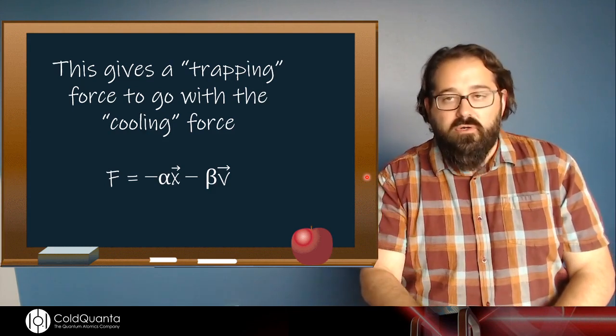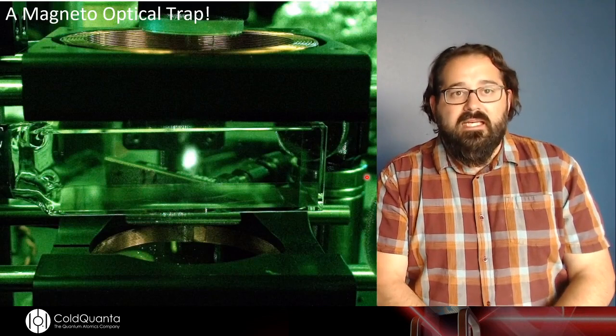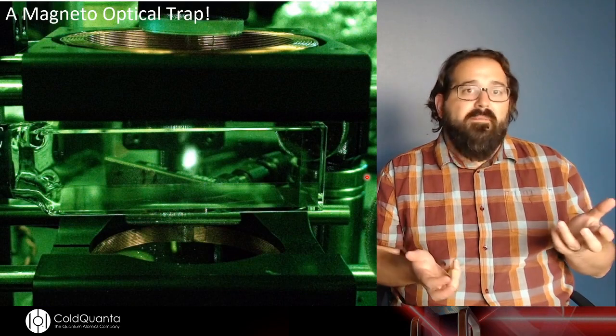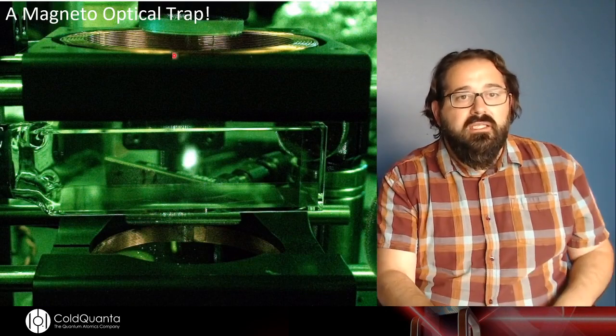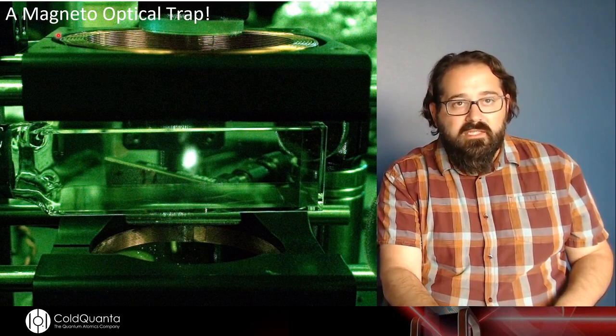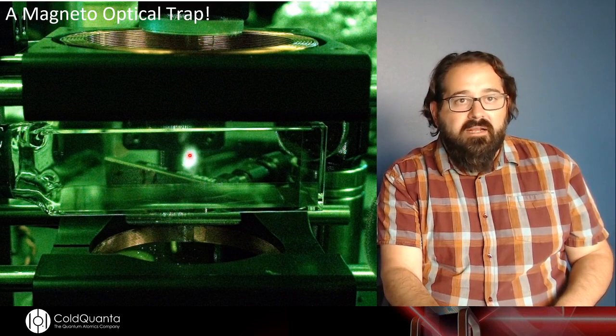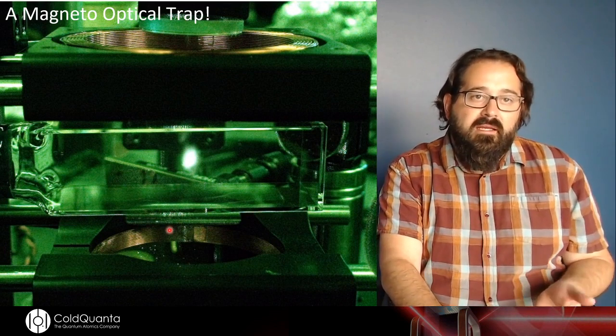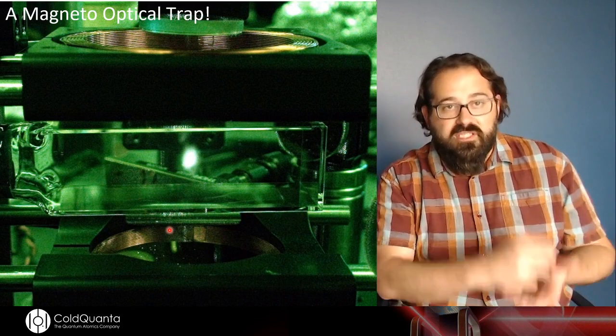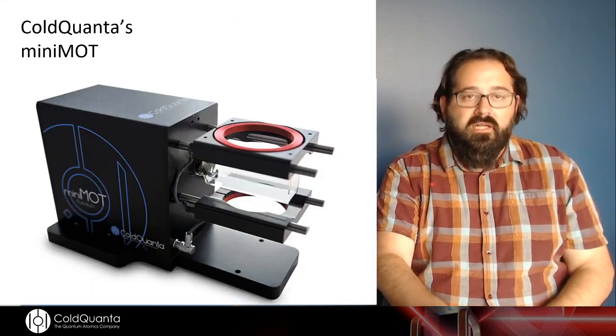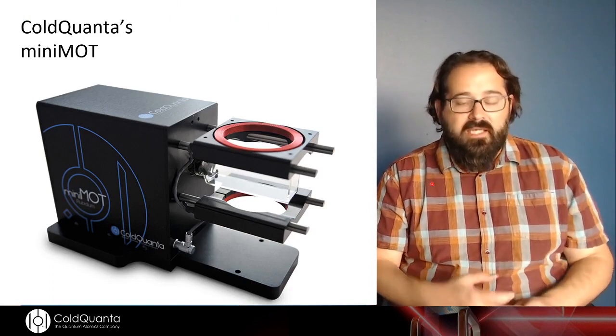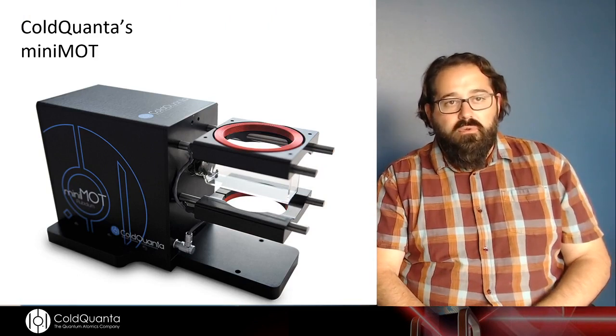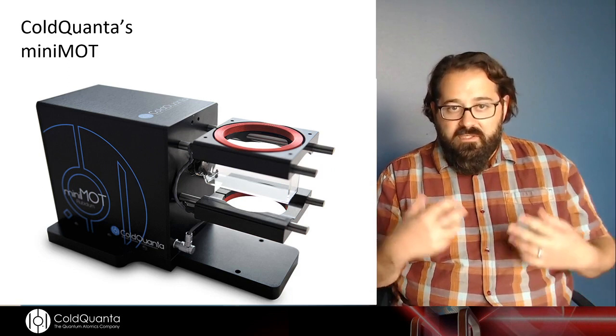So I can write that, I can write an equation down to describe that force, and lo and behold, this actually works. This is a picture of a cloud of atoms that we trapped in our lab using lasers and magnetic fields. You can see these are the coils that we're using to generate the magnetic fields. Here's the little cloud of atoms, there's some optics floating around, and by the way we haven't mentioned it, but all of this has to be done in ultra high vacuum. And this by the way was done in one of the ColdQuanta minimod cells. We make these available as a teaching resource to people who want to do this in educational labs.